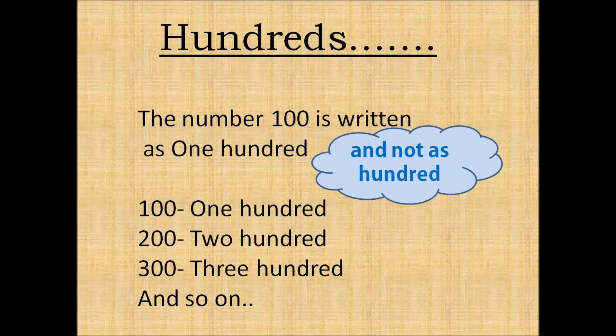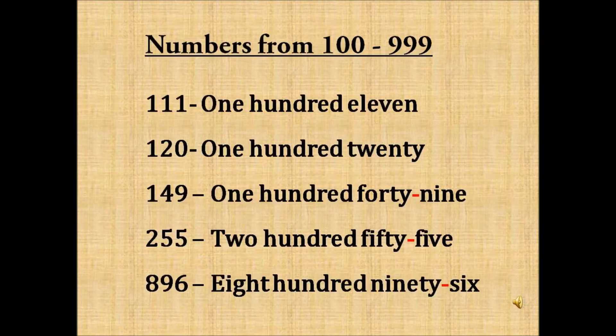Hundreds. The number 100 is written as one hundred, not hundred. In the same way, two hundred, three hundred, four hundred, five hundred, and so on. Let us look at numbers between 100 to 999.